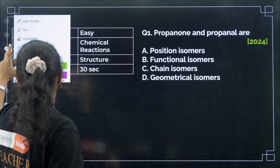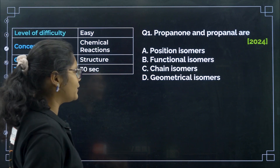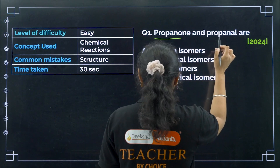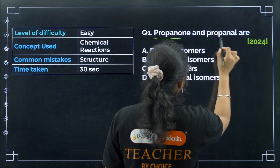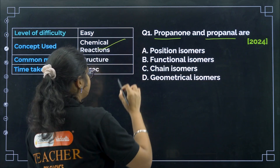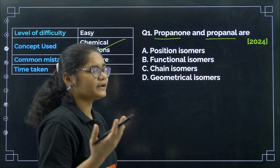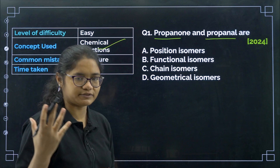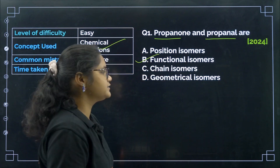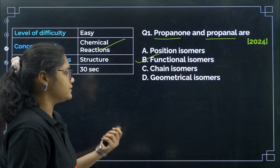The first question is from 2024 — a very simple question. Propanone and propanol are which type of isomers? These are two functional groups with the same molecular formula, so these are functional isomers. Option number B will be the correct answer.